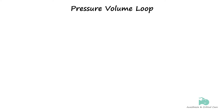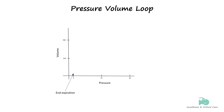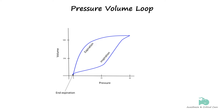The pressure-volume loop in mechanical ventilation is a graphical representation that plots airway pressure on the horizontal axis against lung volume on the vertical axis during the respiratory cycle. It begins at the lower left corner representing the end of exhalation and progresses counterclockwise during controlled mechanical ventilation. The upward portion of the loop represents inspiration, during which pressure increases as volume increases, while the downward portion represents expiration, during which pressure decreases as volume decreases.